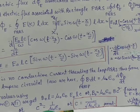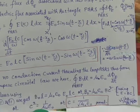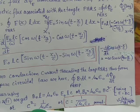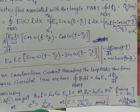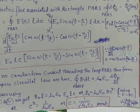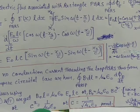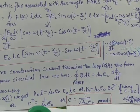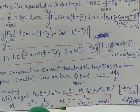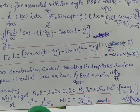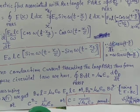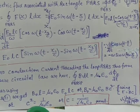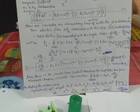Here we substituted E₀ in terms of B₀c, replacing E₀ with B₀c, and on solving we get c equal to 1 by under root mu zero epsilon zero. This proves that the speed of light is constant in vacuum. When we put the values of mu zero and epsilon zero, we get c equal to 3 into 10 to the power 8 meters per second approximately. Thank you and have a nice day.